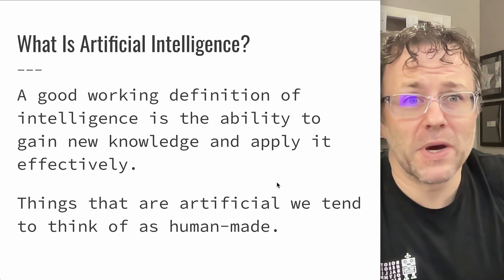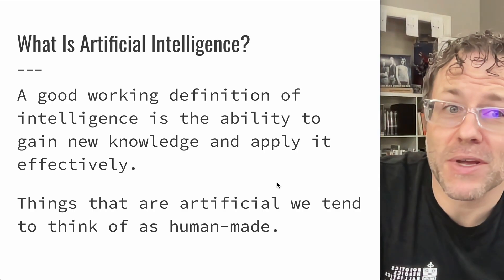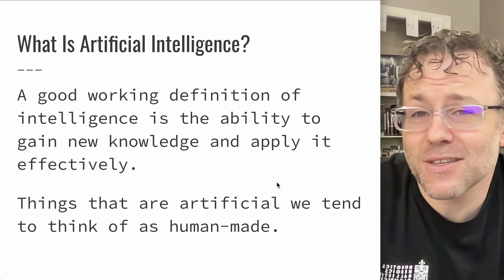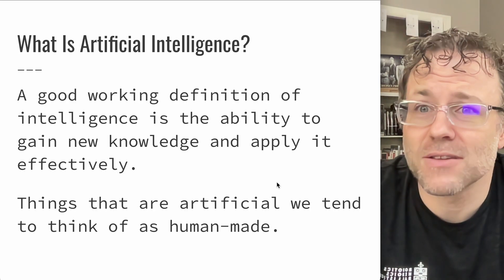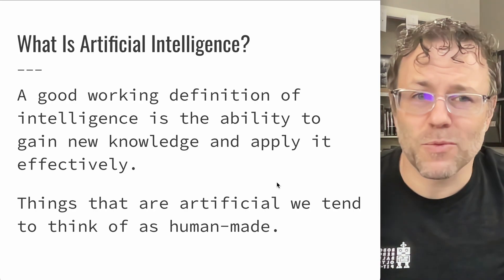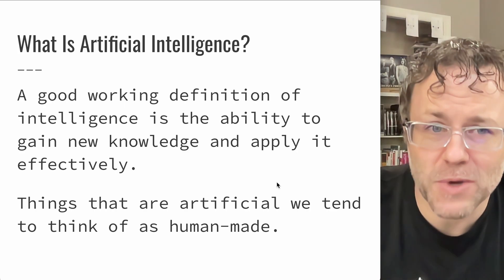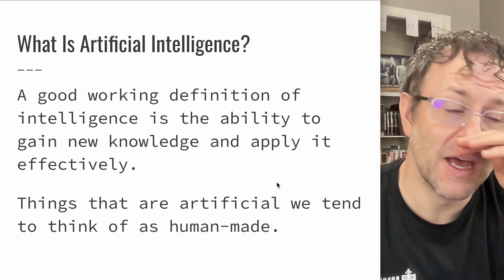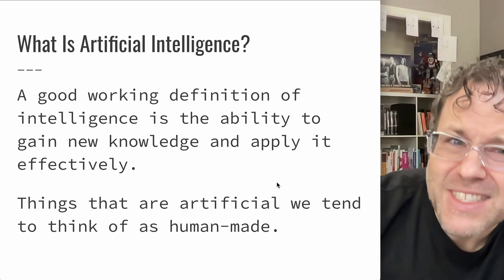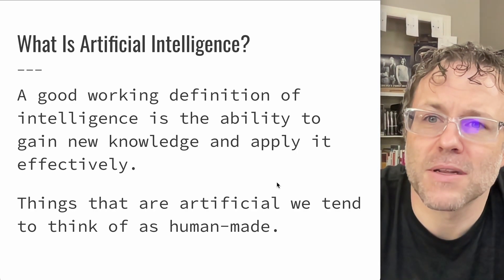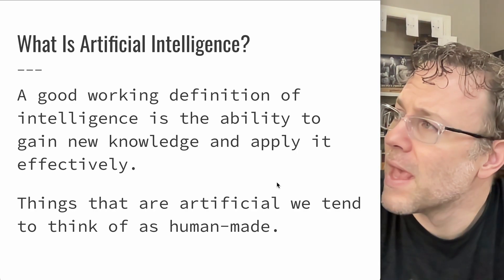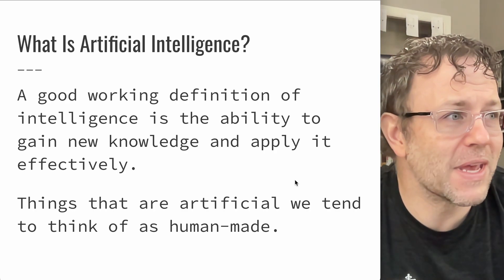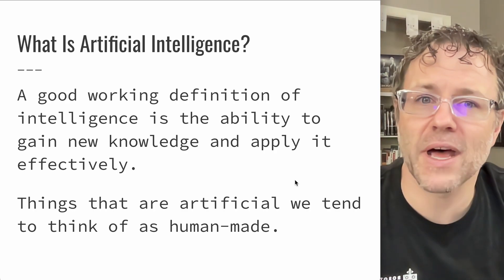So what is artificial intelligence? This is a really good place to start. To talk about artificial intelligence, we first have to talk about intelligence. Intelligence is a thing that we all recognize, we can all point to it and see — this is intelligence — but what does it mean? What do we mean when we talk about intelligence? A good working definition of intelligence is the ability to gain new knowledge and apply it effectively.